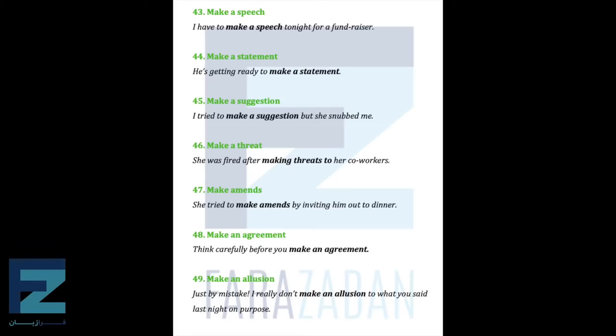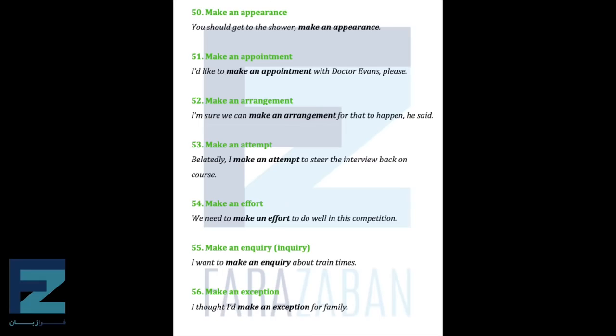Make a suggestion — I tried to make a suggestion but she snubbed me. Make a threat — She was fired after making threats to her co-workers. Make amends — She tried to make amends by inviting him out to dinner. Make an agreement — Think carefully before you make an agreement. Make an allusion — Just by mistake, I really don't make an allusion to what you said last night on purpose. Make an appearance — You should get to the shower; make an appearance. Make an appointment — I'd like to make an appointment with Dr. Evans please. Make an arrangement — I'm sure we can make an arrangement for that to happen, he said.